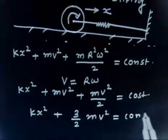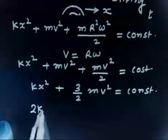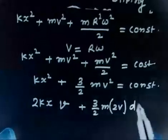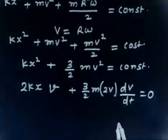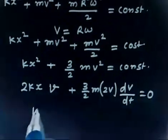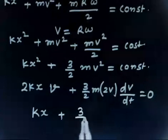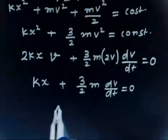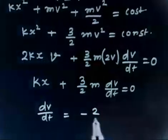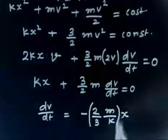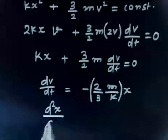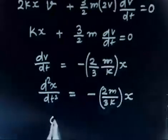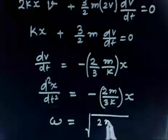Differentiating KX² + (3/2)MV² = constant gives: 2KX·(dX/dt) + (3/2)M·2V·(dV/dt) = 0. Dividing out V: KX + (3/2)M·(dV/dt) = 0. Rearranging: dV/dt = d²X/dt² = −(2K/3M)·X, so ω₂ = √(2K/3M).